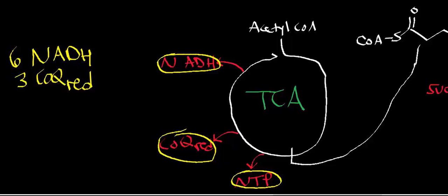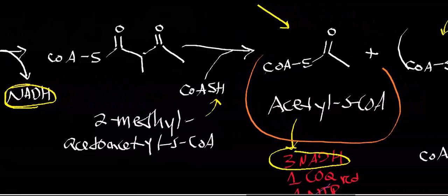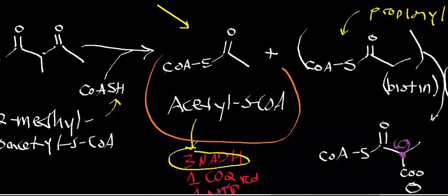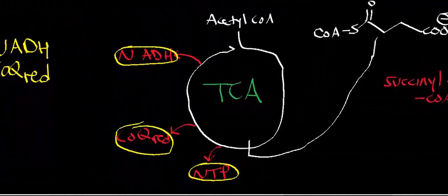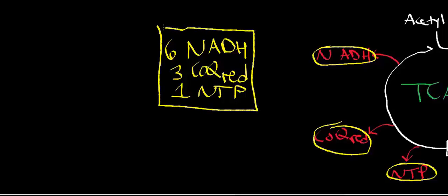For nucleoside triphosphates: we generated one from the acetyl-CoA TCA cycle, but that was canceled by the ATP consumed in propionyl-CoA carboxylase, giving a net of zero. However, the succinyl-CoA entering the TCA cycle reacts with succinyl-CoA synthetase, generating one nucleoside triphosphate — either GTP or ATP, since they interconvert via nucleoside diphosphate kinase. So the total yield per isoleucine is six NADHs, three reduced CoQs, and one NTP — nowhere near as energetically powerful as leucine.